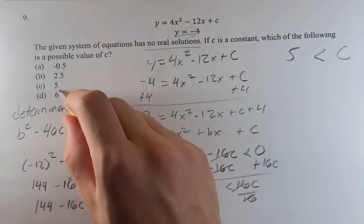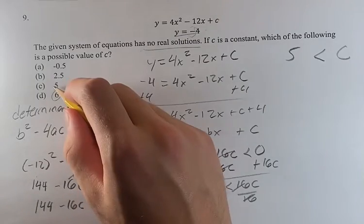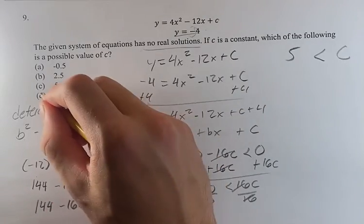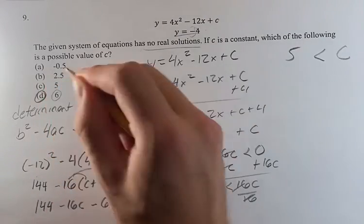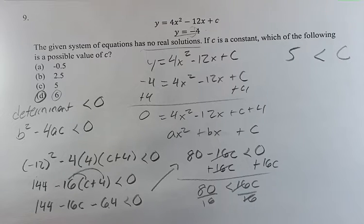Out of these options, only 6 is greater than 5. The rest of them are either equal to 5 or less than 5, so d is going to be our answer. Thank you as always for liking and subscribing, and I'll see you in the next video.